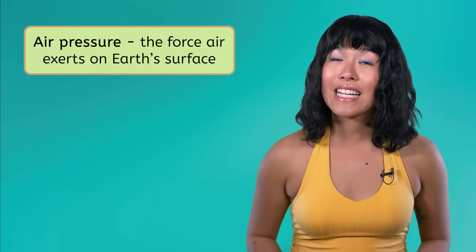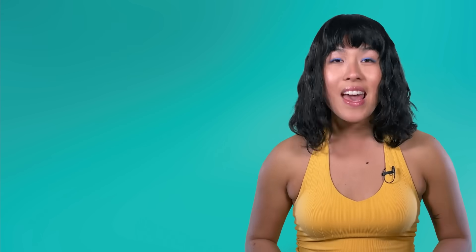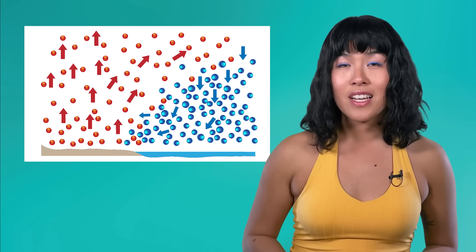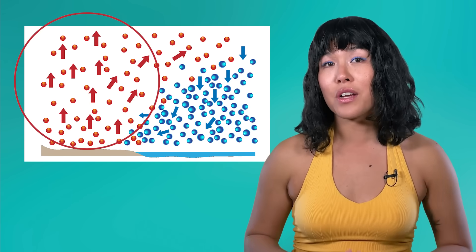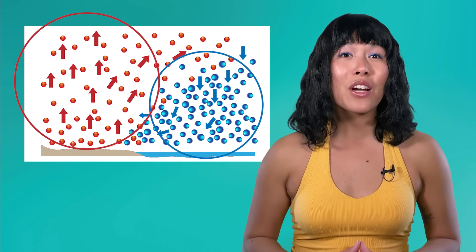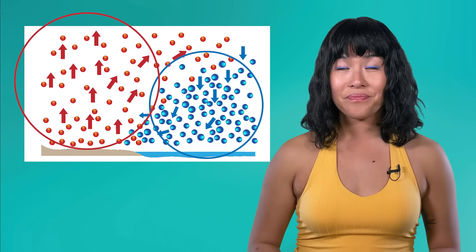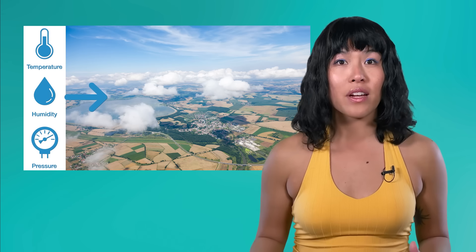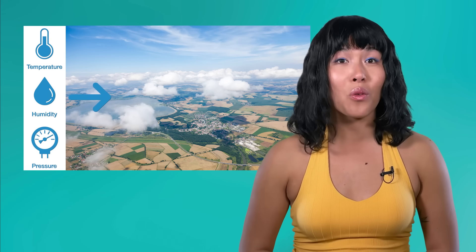Air pressure is also directly connected to temperature. As we know, warm air rises and spreads out, resulting in lower air pressure since the air is less dense and exerts less pressure on the ground. And since cold air sinks, it brings higher air pressure since the air is more dense and exerts more pressure. Air masses play a key role in determining the weather patterns we experience. When an air mass moves into a new region, it brings its characteristic temperature, humidity, and air pressure with it, which influences the local weather.